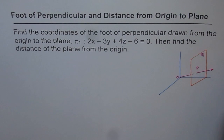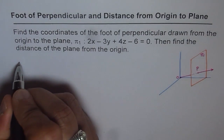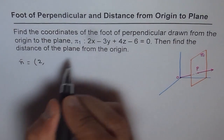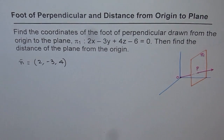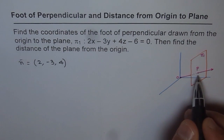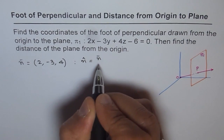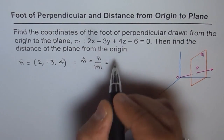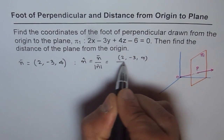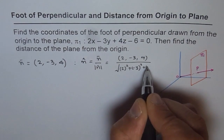How to find P? Point P lies along the normal to the plane. The normal to plane π₁ is given as (2, -3, 4). If we consider a unit vector along the normal, OP will lie along that unit vector. The unit vector n̂ equals the normal divided by its magnitude: (2, -3, 4) divided by √(2² + (-3)² + 4²).